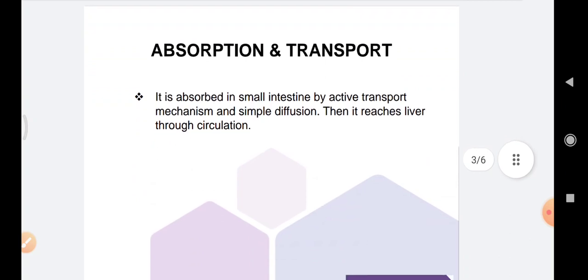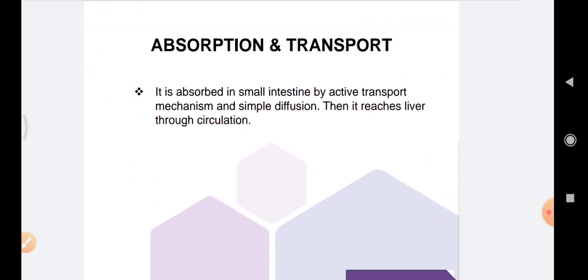Coming to the absorption and transport, thiamine is absorbed in small intestine by active transport mechanism and simple diffusion. Then it reaches liver through circulation.